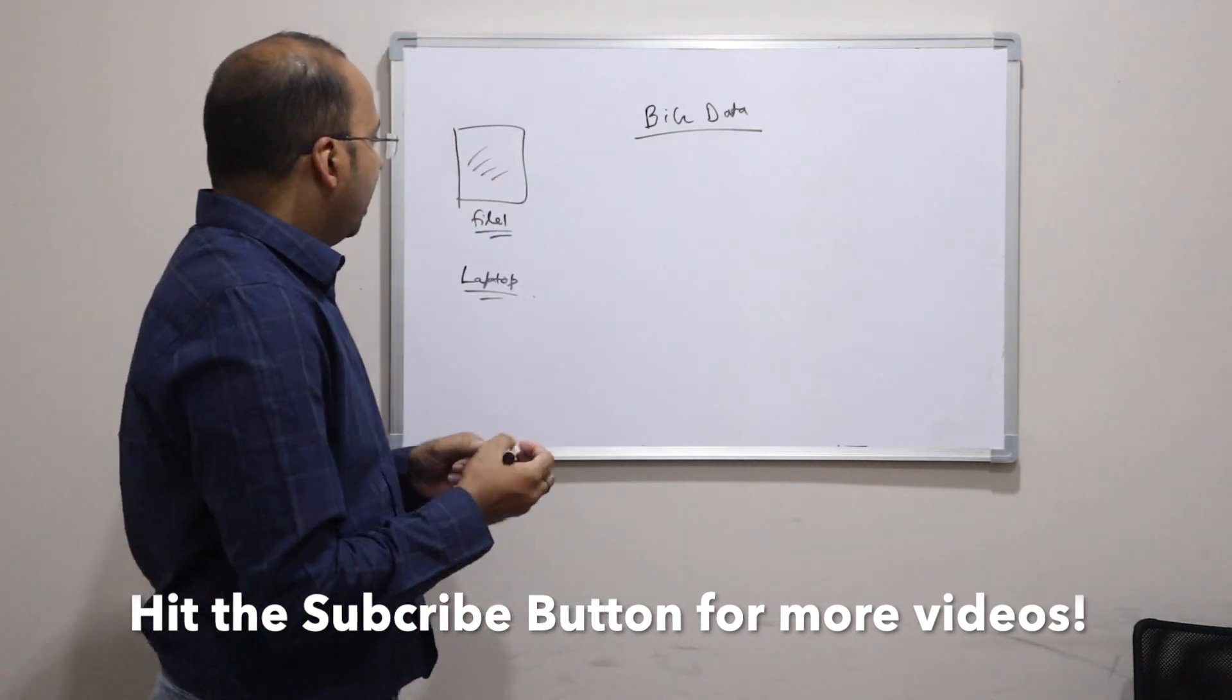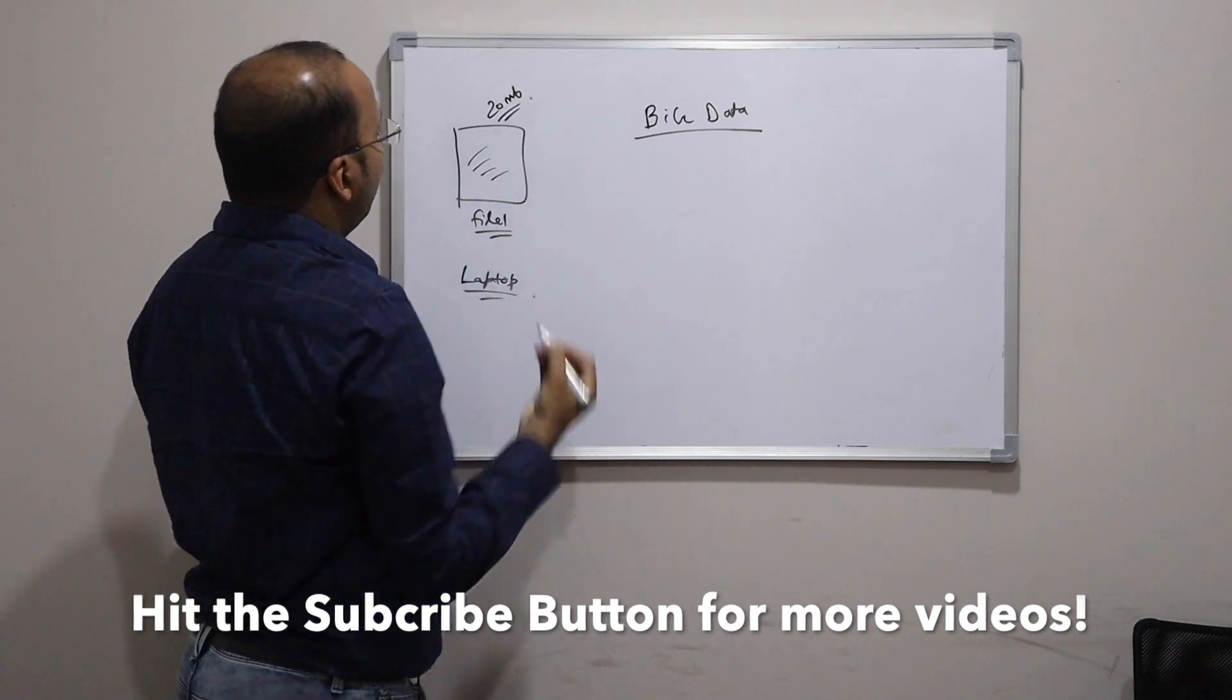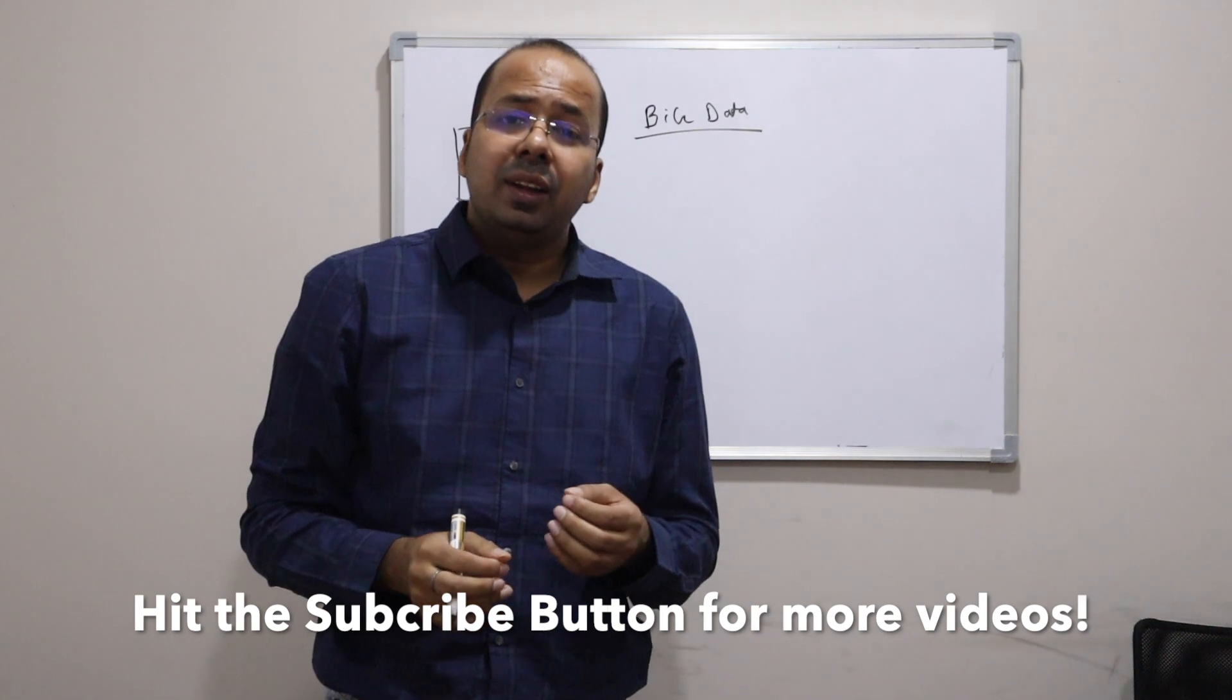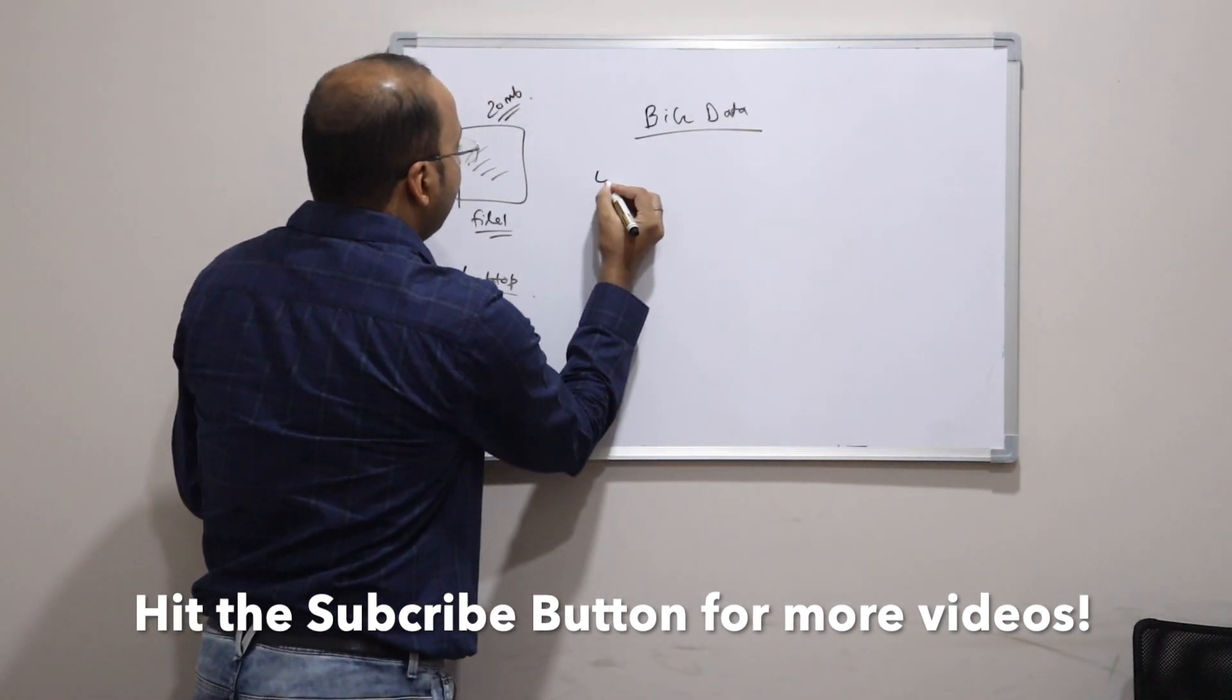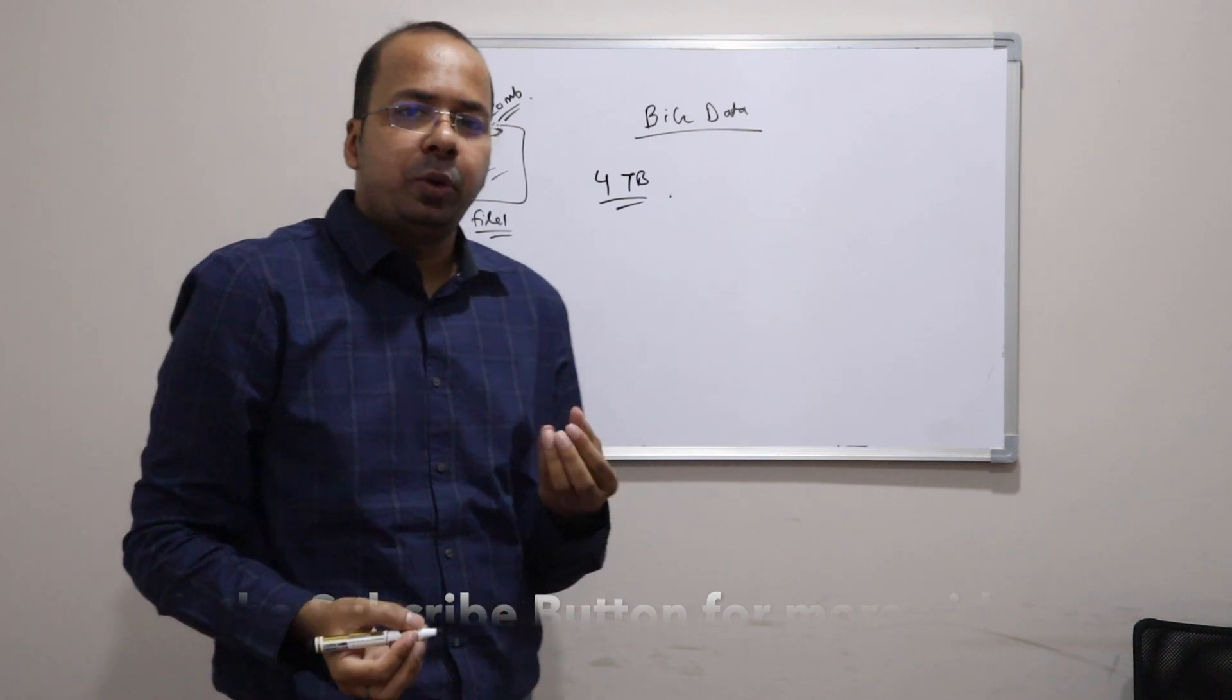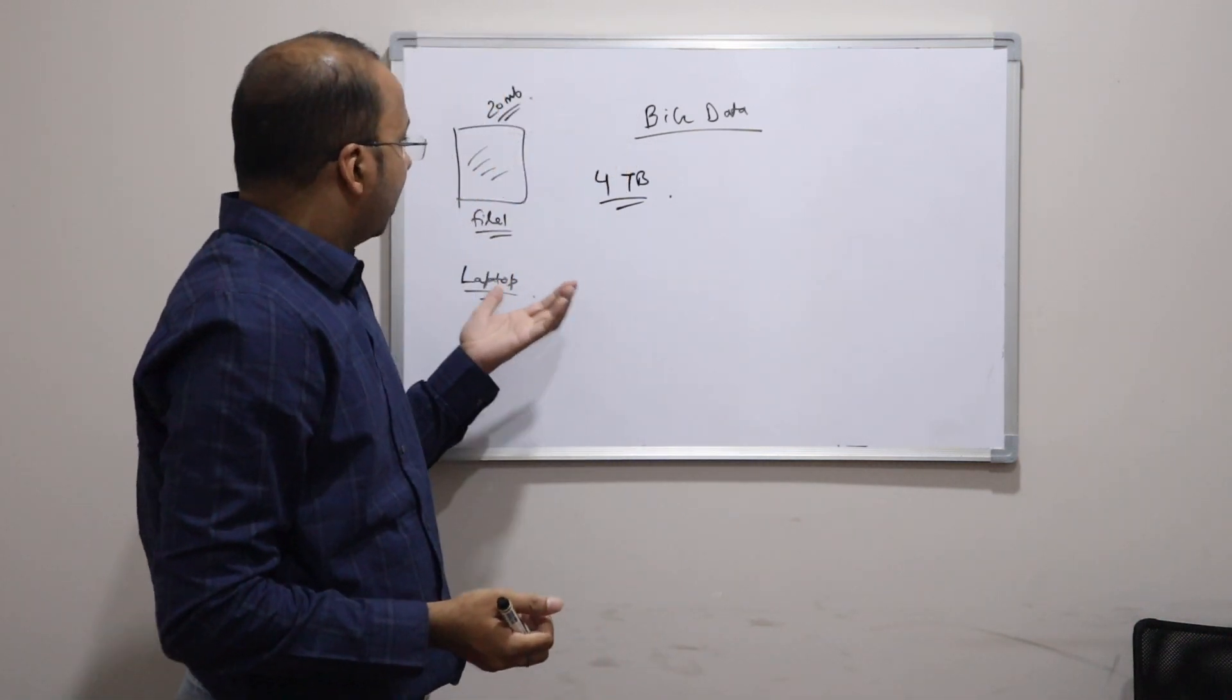Fine. Now consider instead of a 20 MB file, instead of 20 MB, consider the file is very very big. Let's say it is 4 TB. When is it TB? I hope you understand it is terabytes. 4 TB is quite big.